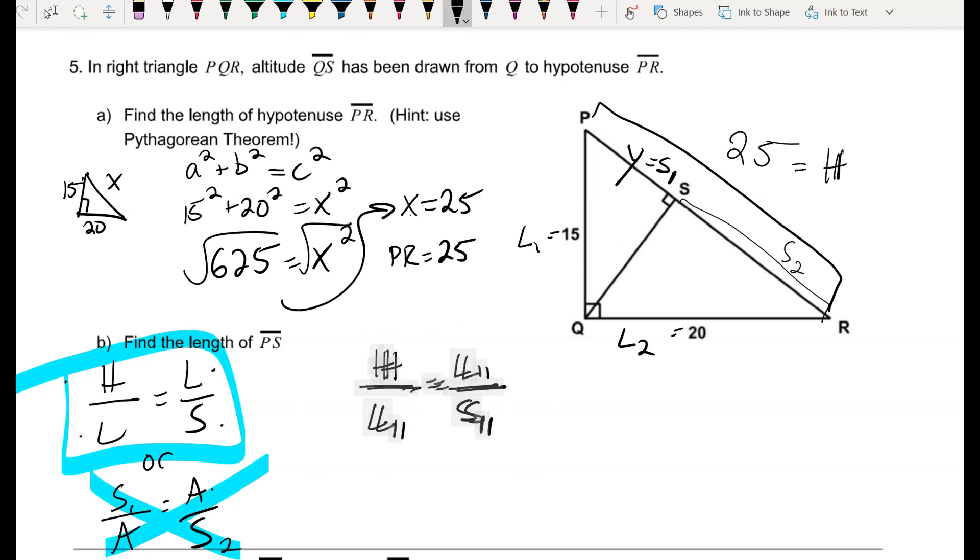So I'm going to substitute. I'm going to take my hypotenuse, put it over leg 1, set that equal to leg 1 over its corresponding side 1. And notice the number along the diagonal is the same. My hypotenuse is 25. My leg 1 is 15. And side 1, PS, is exactly what I'm looking for.